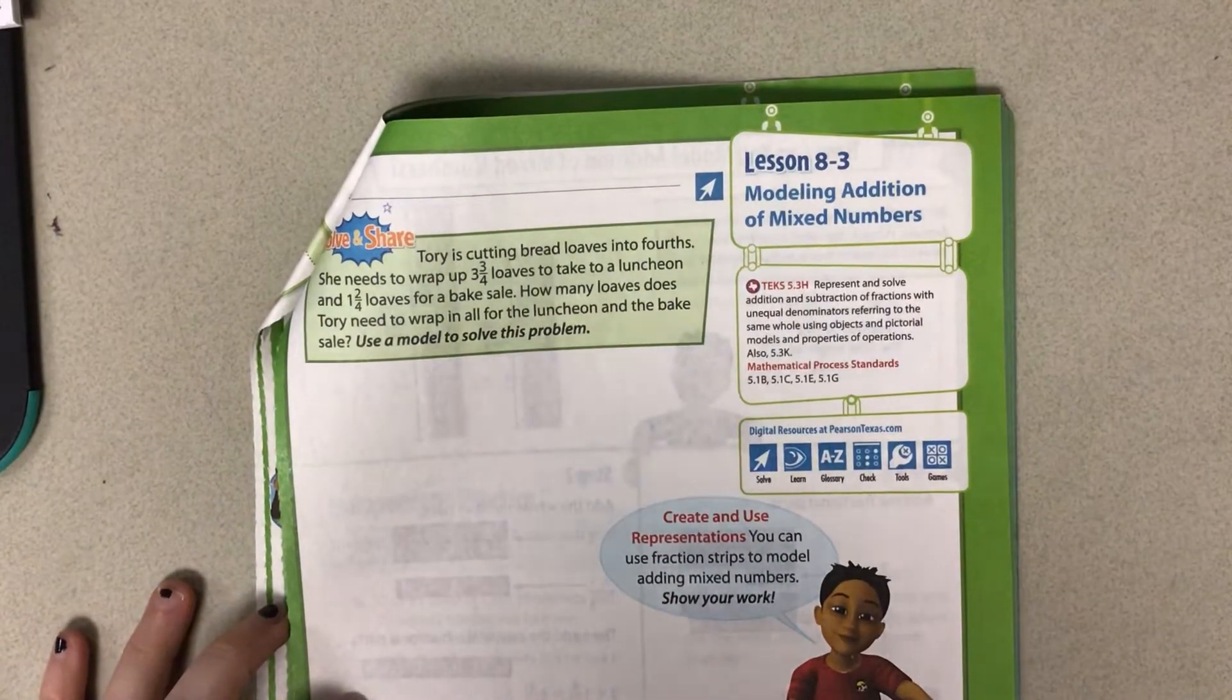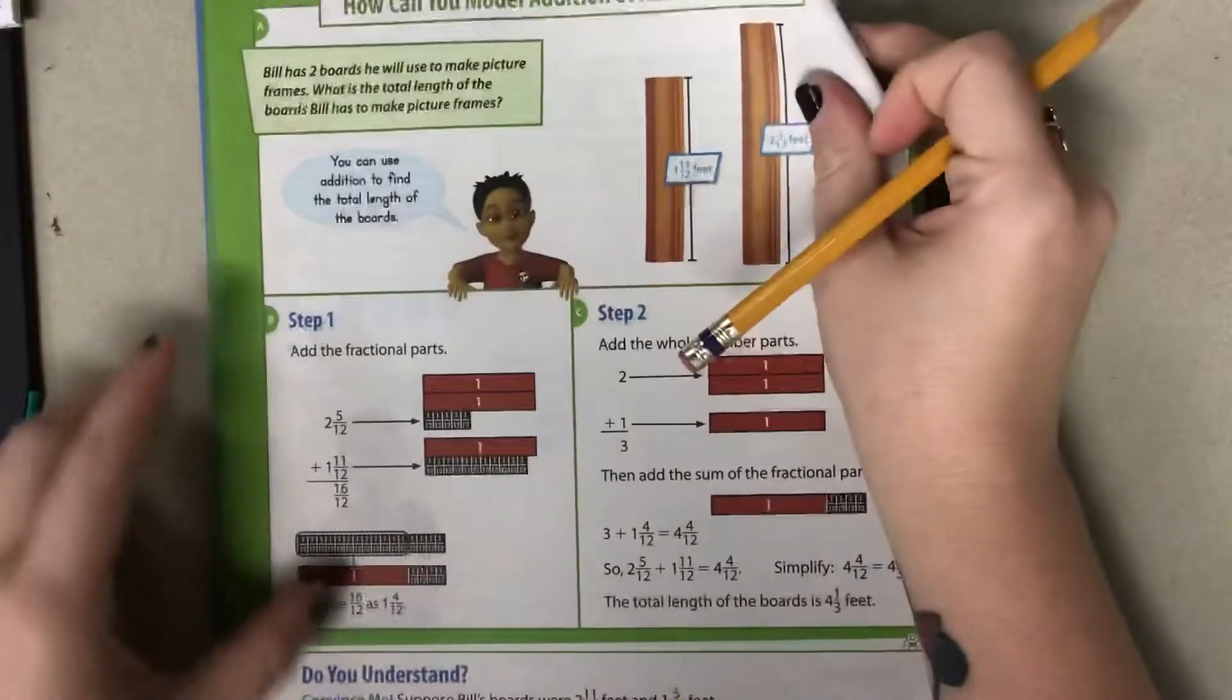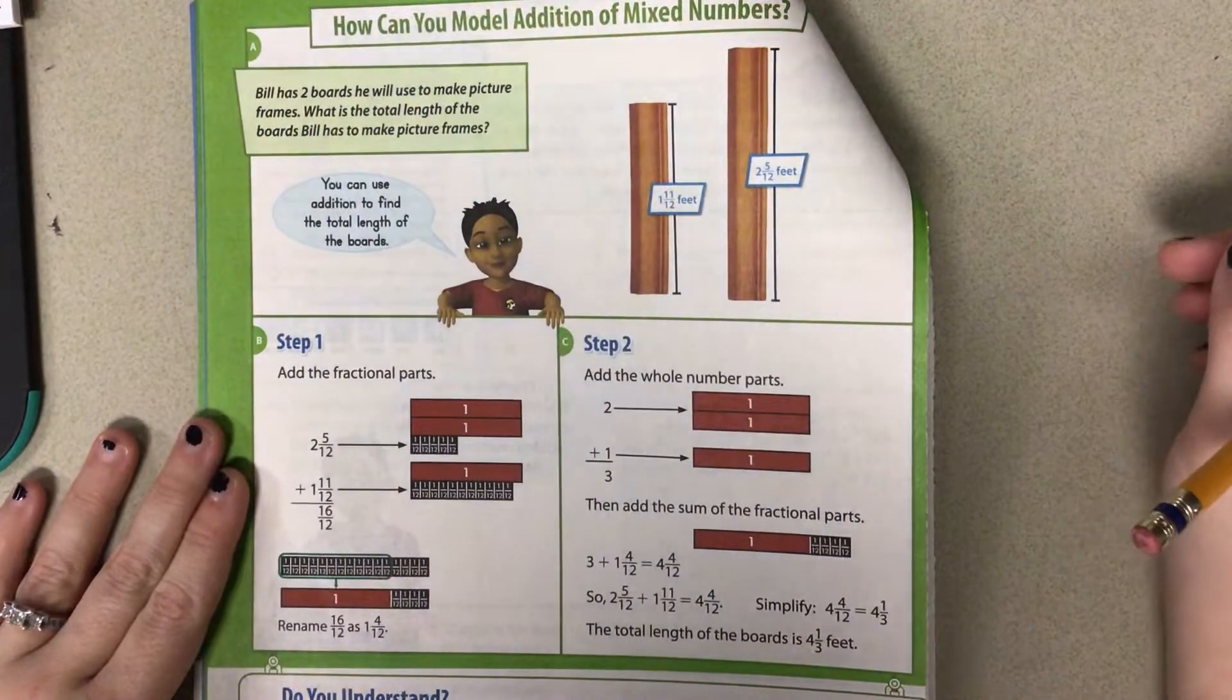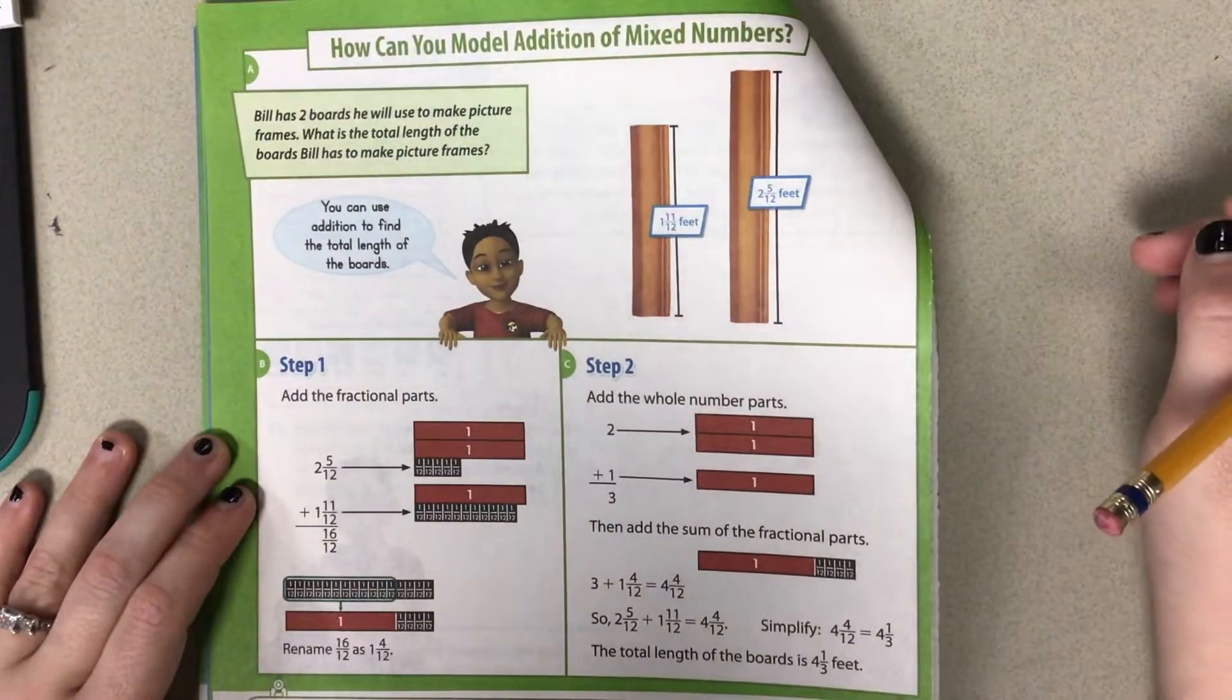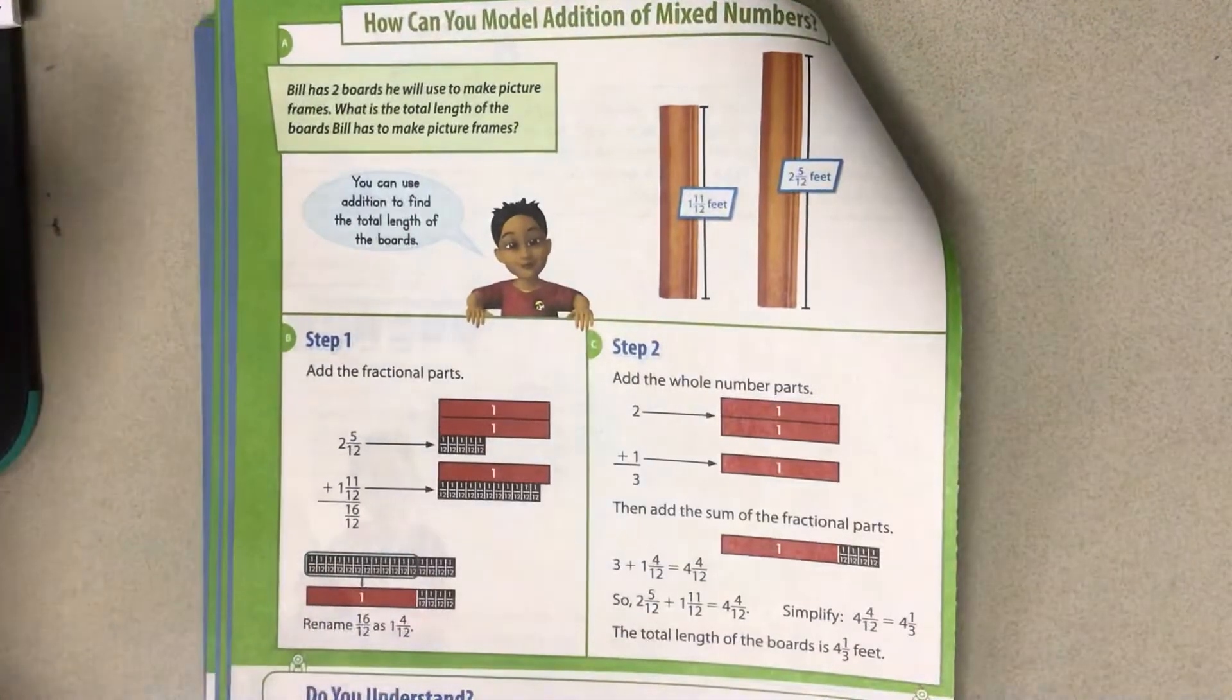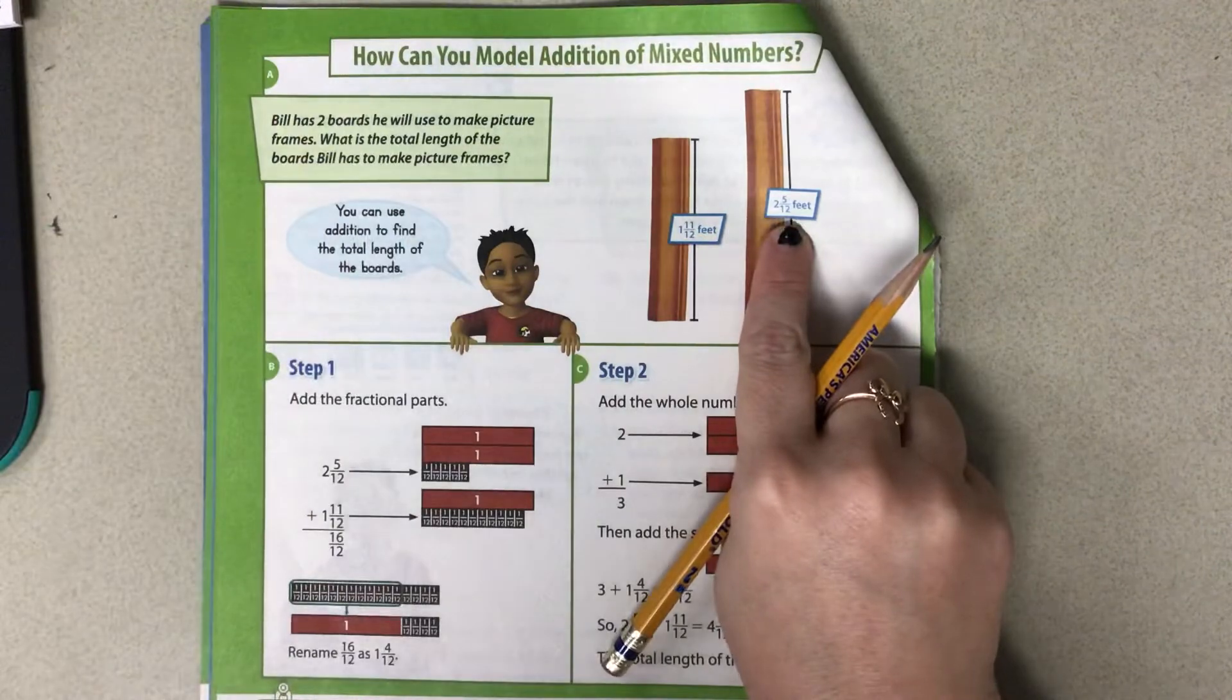Lesson 8-3, Modeling Addition of Mixed Numbers. We are going to flip the page to 402, and we're going to look at the actual models. So it says Bill has two boards that he will use to make picture frames. What is the total length of the boards that he has to make picture frames? So here we have 1 and 11 twelfths, and 2 and 5 twelfths.